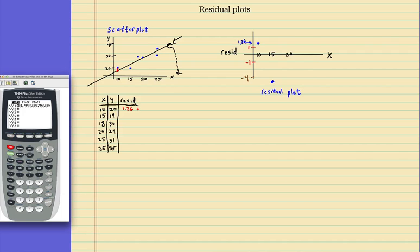So second stat, which is list. Second stat, which is list. We want to go to number 8. So I hit the up button and it says resid. So I hit, when you do this, you have to be in a clear screen when you do that. So let me just go ahead and do this real quick.